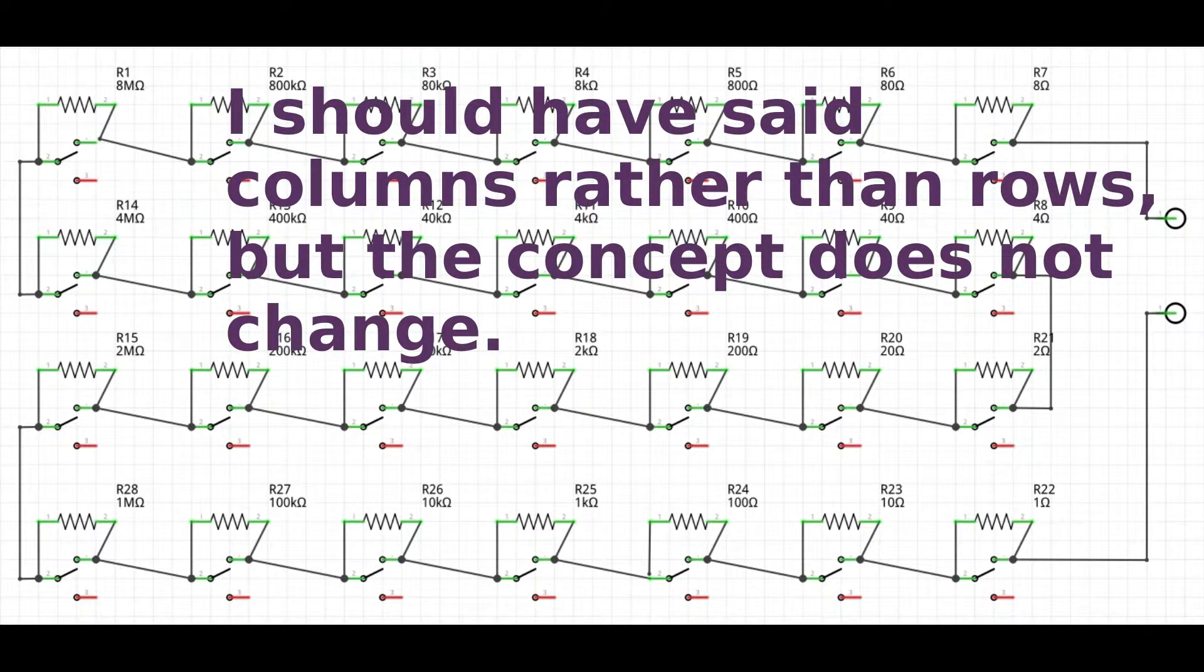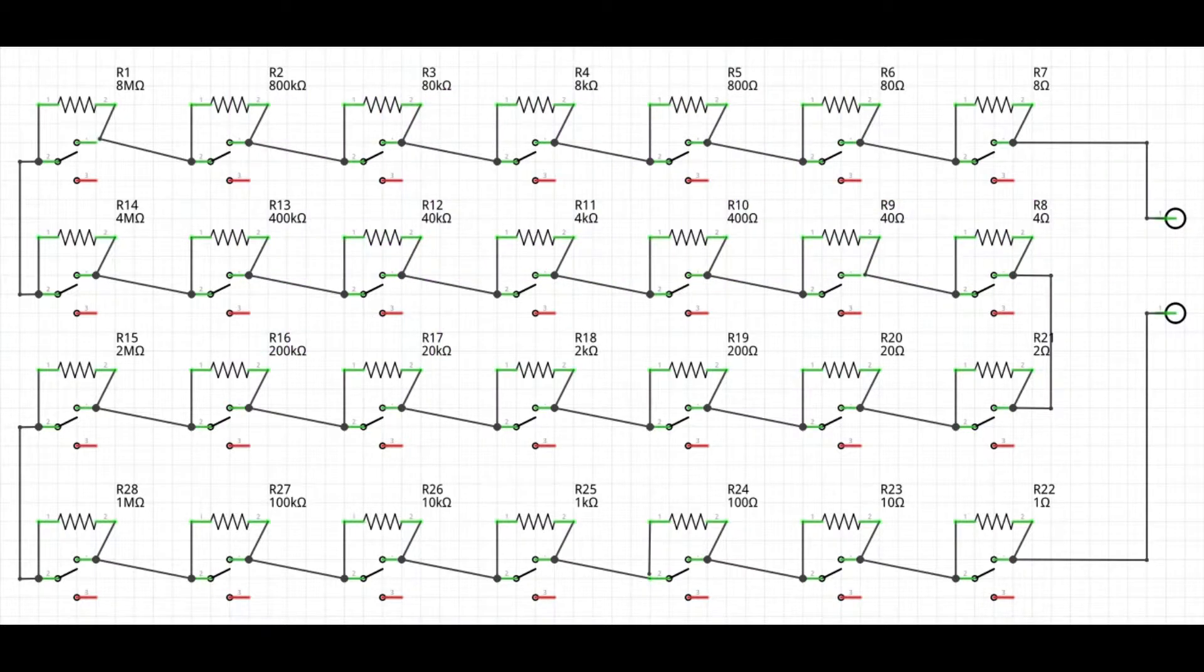There are seven rows of switches. One row for the single digit resistance, one for two digit values, one for three digit values, and so forth. Each row has four switches. The first row with the values of 1, 2, 4, and 8 ohms. The second row with the values of 10, 20, 40, and 80 ohms, and so forth all the way to the last row, with the values of 1, 2, 4, and 8 megaohms.